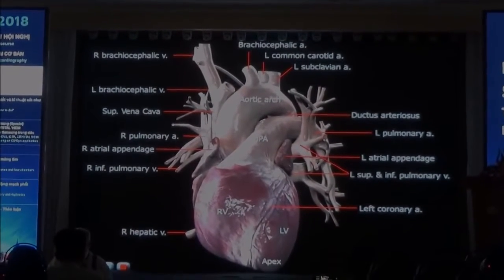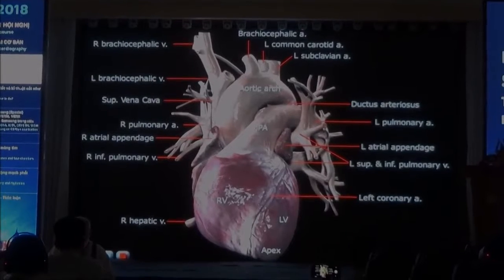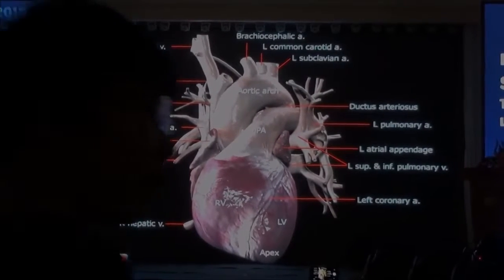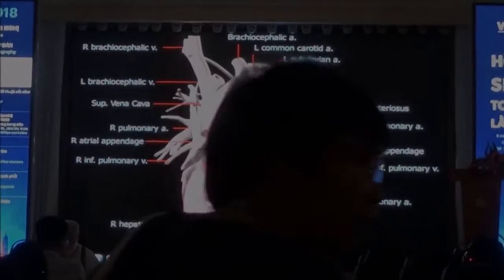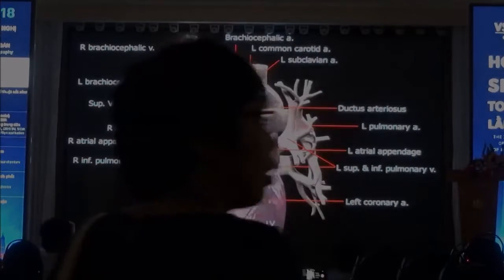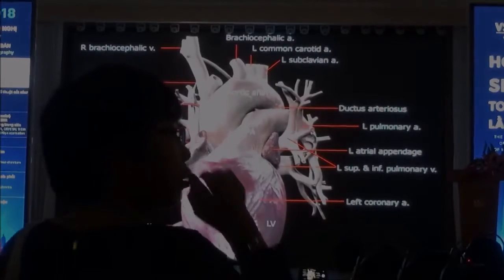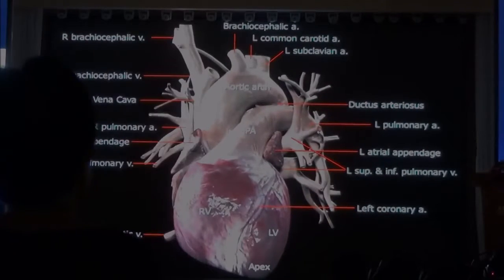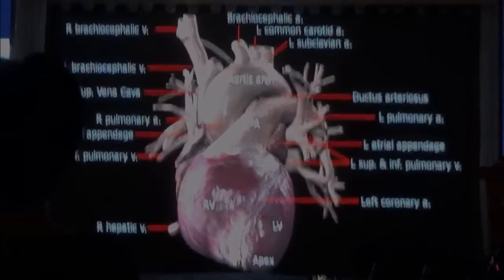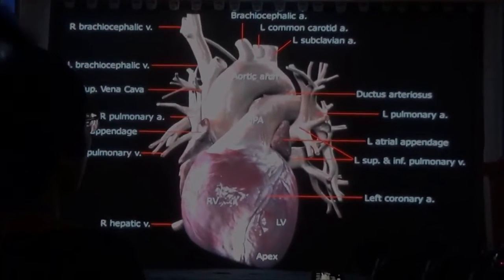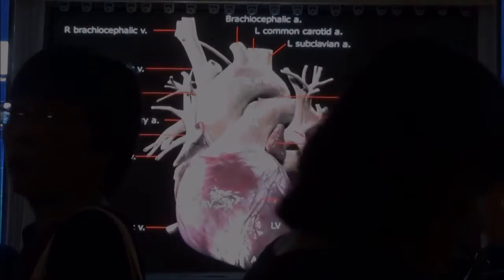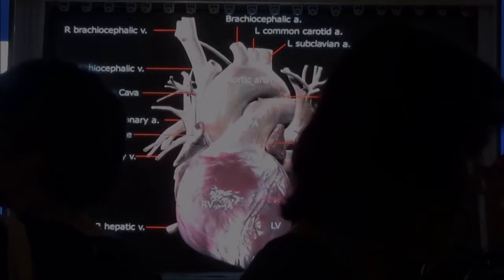Notice also that there is nothing between the aorta and the main pulmonary. If you see something between the aorta and the pulmonary, you have a baby that has a problem. And there is also nothing between the aortic arch and the superior vena cava. If you see something there, this is a problem.